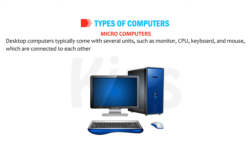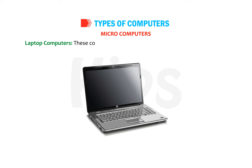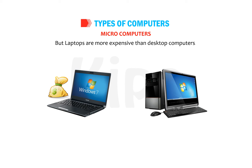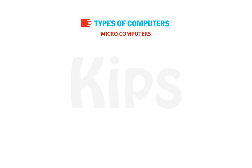Laptop Computers: these computers are small in size and can be placed on the lap. These are battery operated and portable. We can perform all the tasks on a laptop as we do on a desktop, but laptops are more expensive than desktop computers. These computers are mainly used by people who travel a lot. We can fold down the screen onto the keyboard when not in use. Laptops usually have a 13 to 15 inch screen.